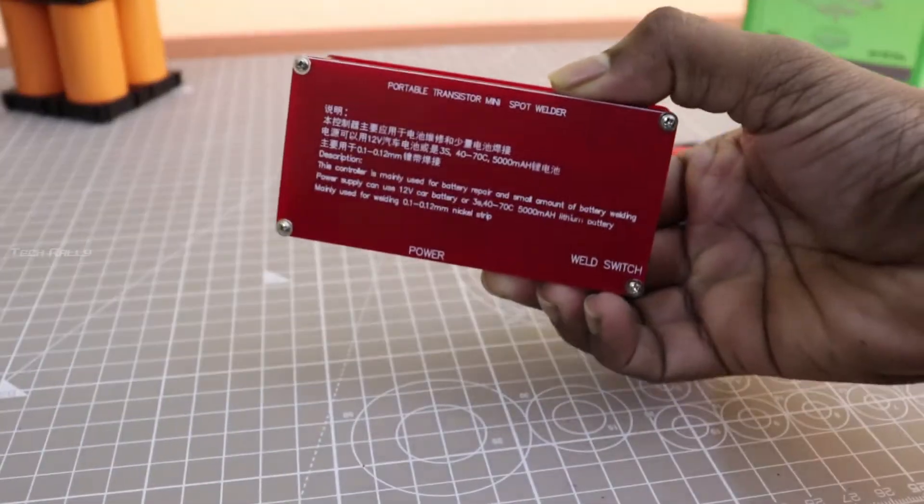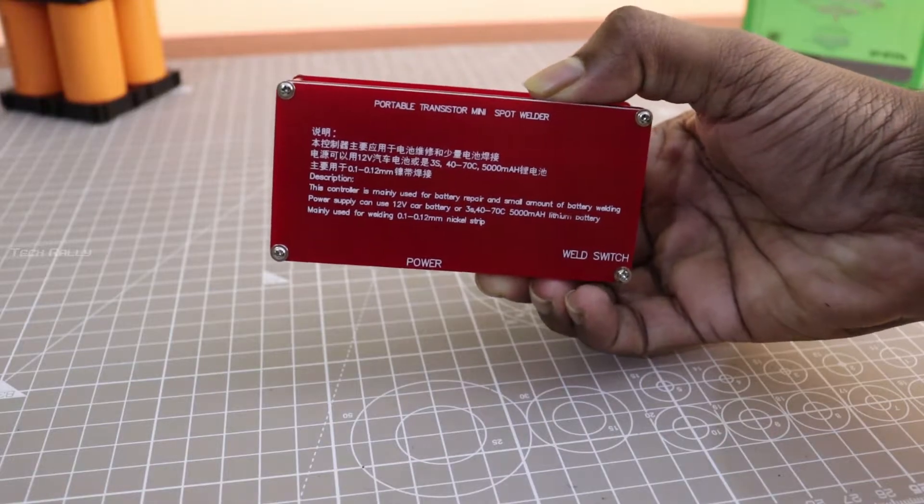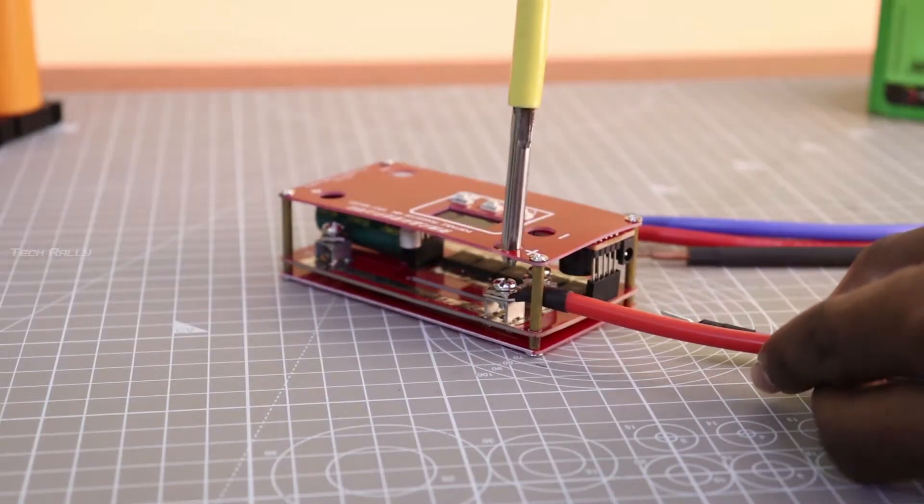The battery spot welder has to be powered by a car battery or a 3S 5000mAh LiPo battery.